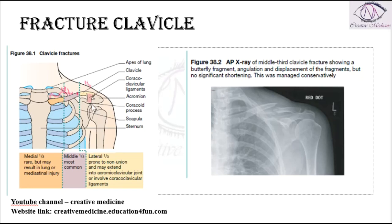Lateral one-third fractures can also occur, though they are rare. When they do occur, they are prone to non-union and can extend to involve the acromioclavicular joint or the coracoclavicular ligaments.